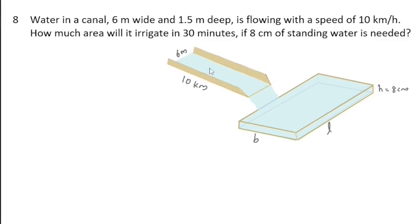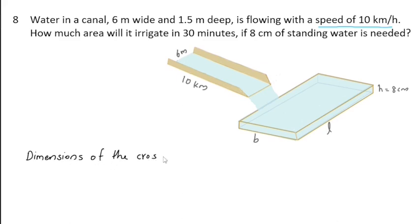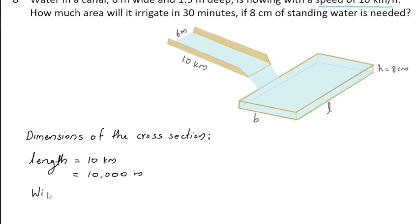This is the cross-section of the canal through which the water flows into the land. The width of the canal is 6 meters, the depth of the water that flows through it is 1.5 meters, and the speed of water is 10 kilometers per hour. That means the water flows up to a length of 10 kilometers in one hour through the canal, so the length of this cross-section is 10 kilometers. The dimensions of the cross-section: its length is 10 kilometers, that is 10,000 meters; width is 6 meters.